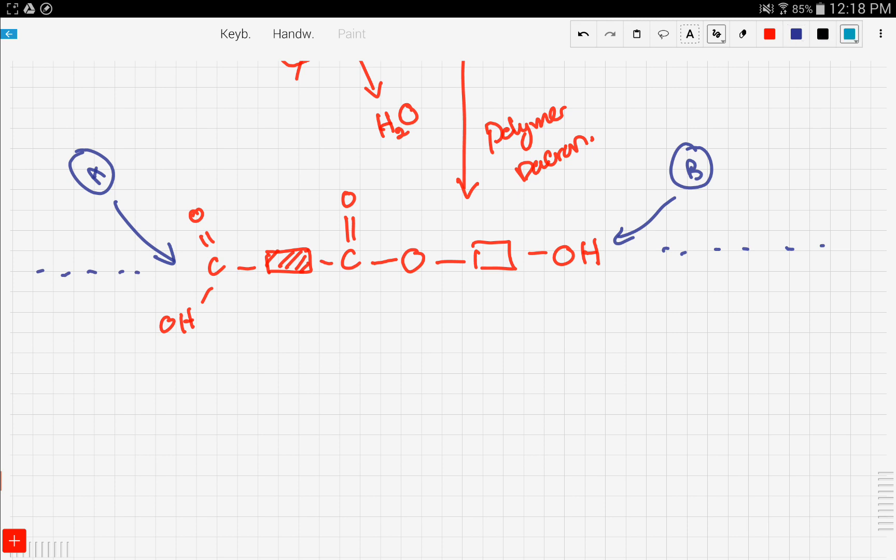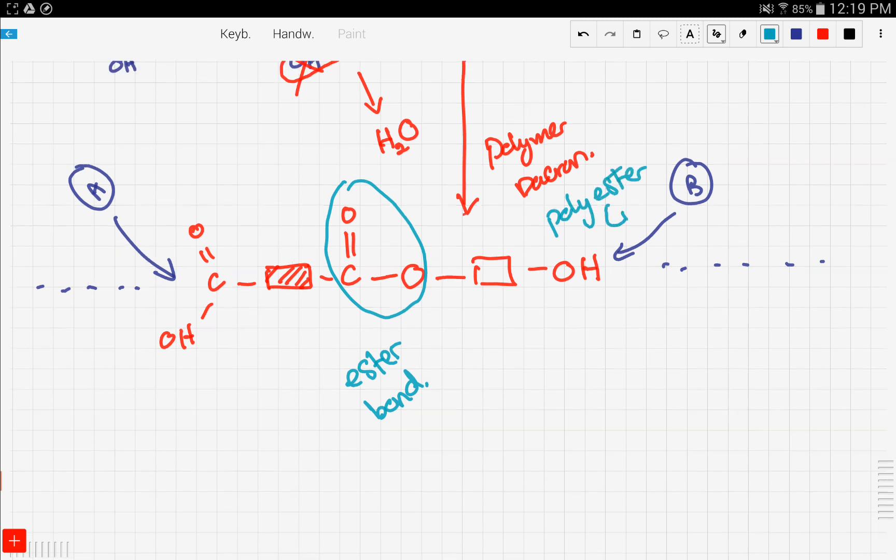Now let's analyze our polymer like we did in the nylon. Now here we have a linkage, and this linkage or bond is called an ester linkage or bond. Let's call it a bond so we can be consistent. So an ester bond.